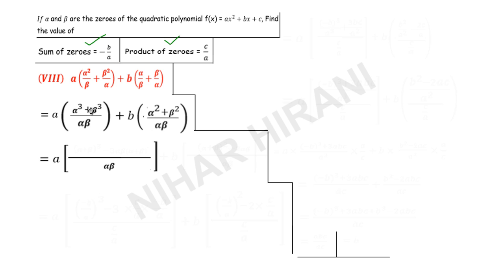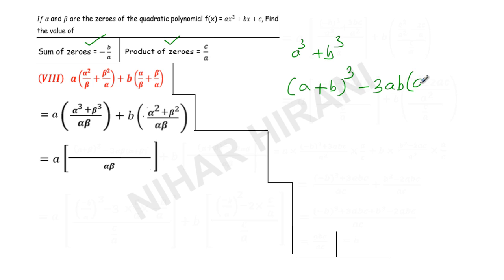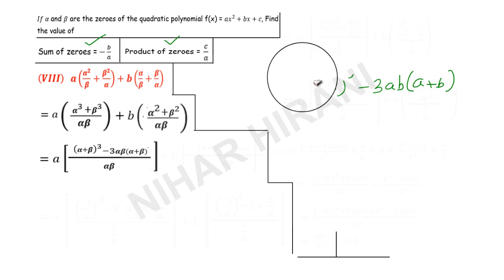To simplify further, if you know the identity for a cubic polynomial you can understand it easily. Let me remind you: a³ + b³ = (a + b)³ − 3ab(a + b). Here I am explaining with a and b, but same way for alpha and beta: (alpha + beta)³ − 3·alpha·beta·(alpha + beta). If you know this identity it is easy; if not, you can refer to the identities of cubic polynomials.